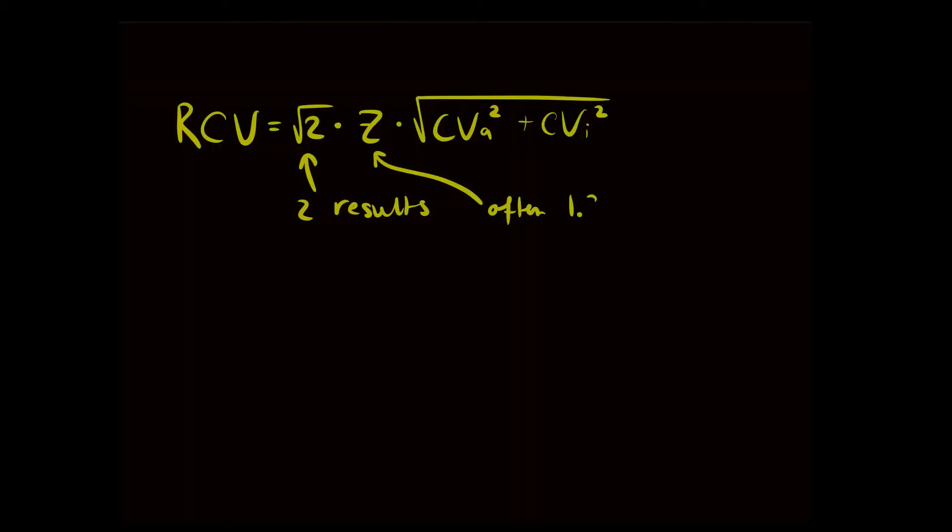And as z-score, we often use 1.96, as this provides a two-sided 95% confidence. The coefficients of variations are the analytical and individual variations. That's the formula of the RCV.